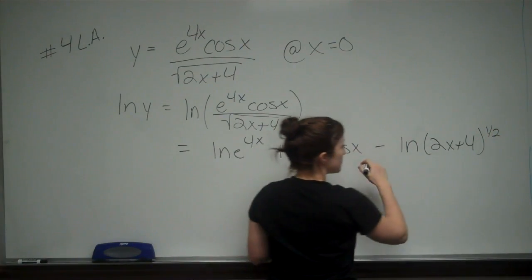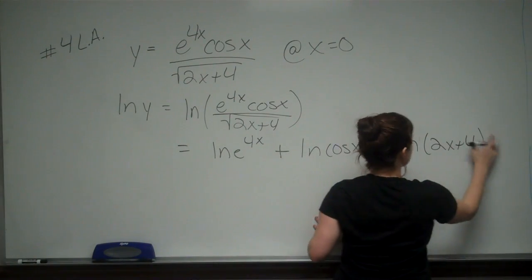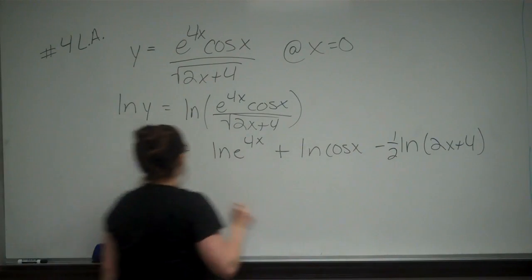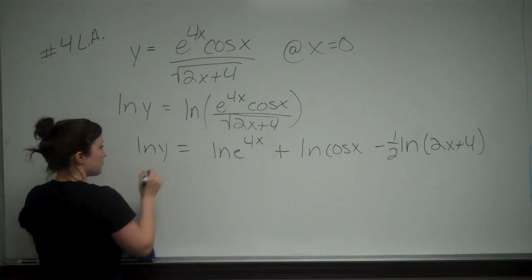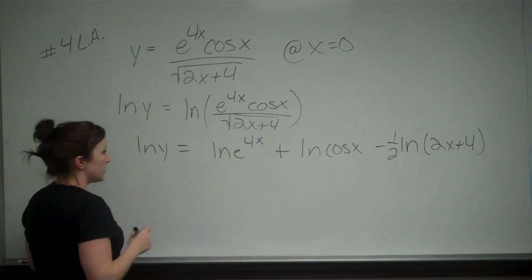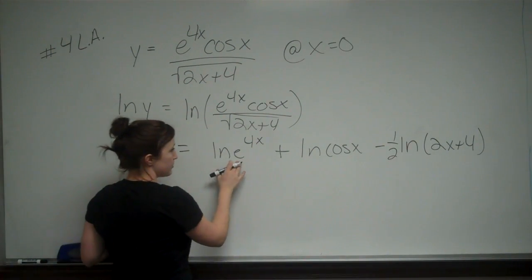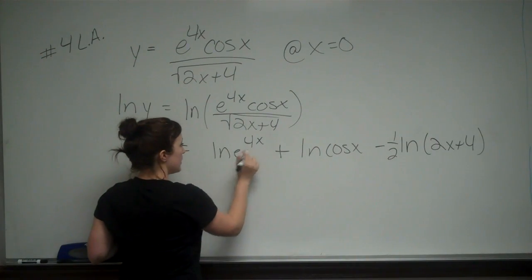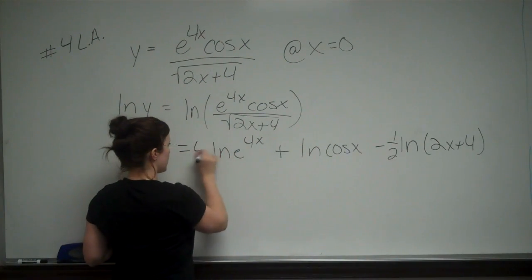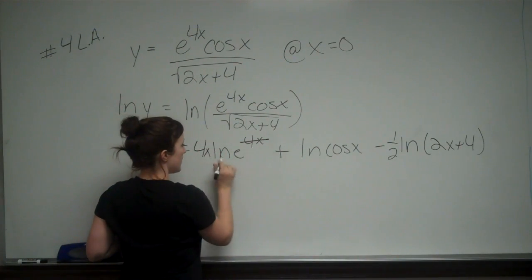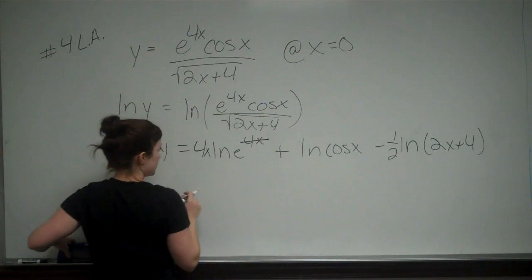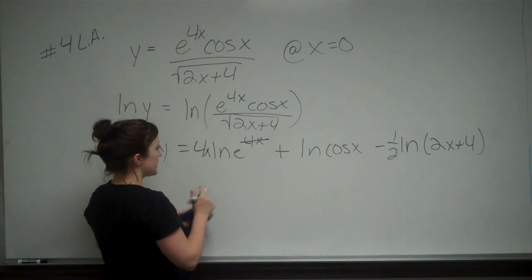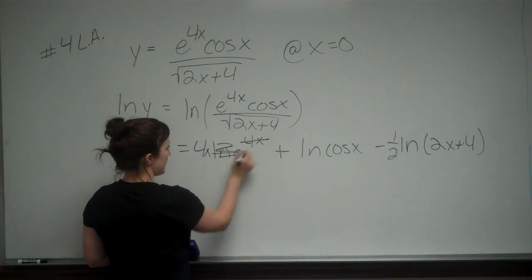Remember, we can bring that one half down to the front. So this is all equal to ln of y. We can simplify further: the ln of e to the 4x — we can bring that 4x to the front, and ln of e is just 1. So this gives us 4x times ln of e, which is just 4x.